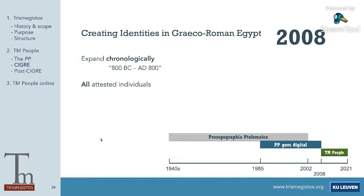In 2008, when the multilingualism project in Cologne was finished, a new project was set up in Leuven — the Creating Identities project — to study identity formation in the multicultural society of Egypt. In a certain way this was a continuation of the multilingualism project that led to the creation of Trismegistos, but now the focus was specifically on domestic habits of the population and how names were used to express identity. This is when TM People was born. We had a lot to fall back on thanks to the PP, not only in terms of data but also the database structure. Both were used as a starting point for TM People.